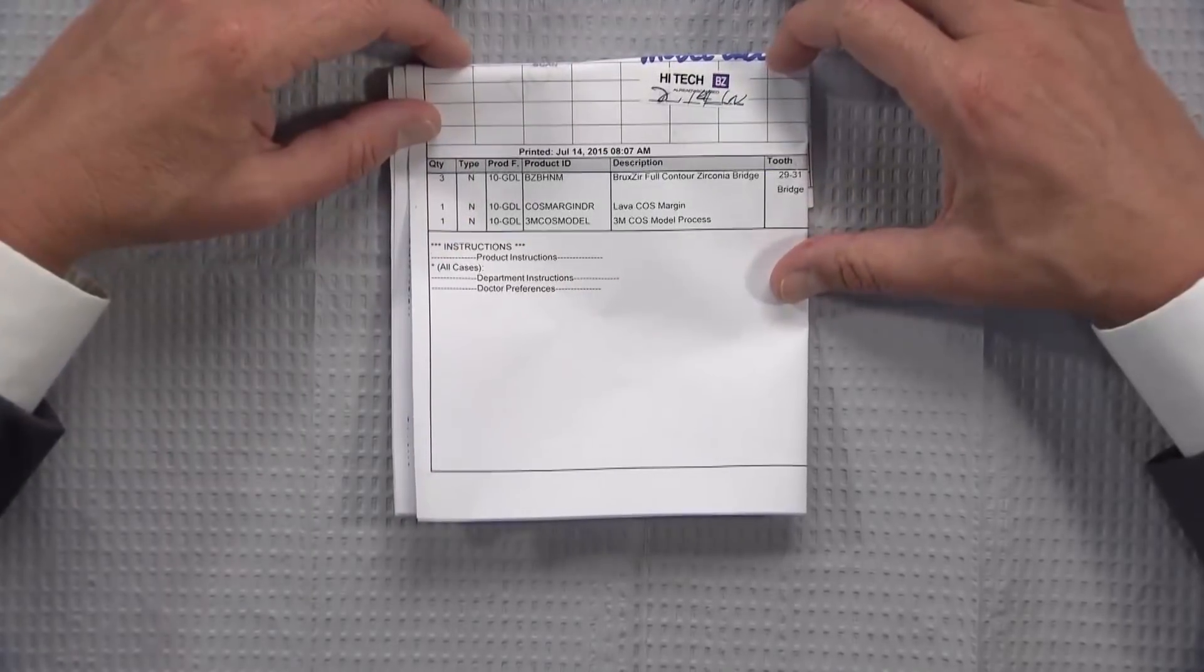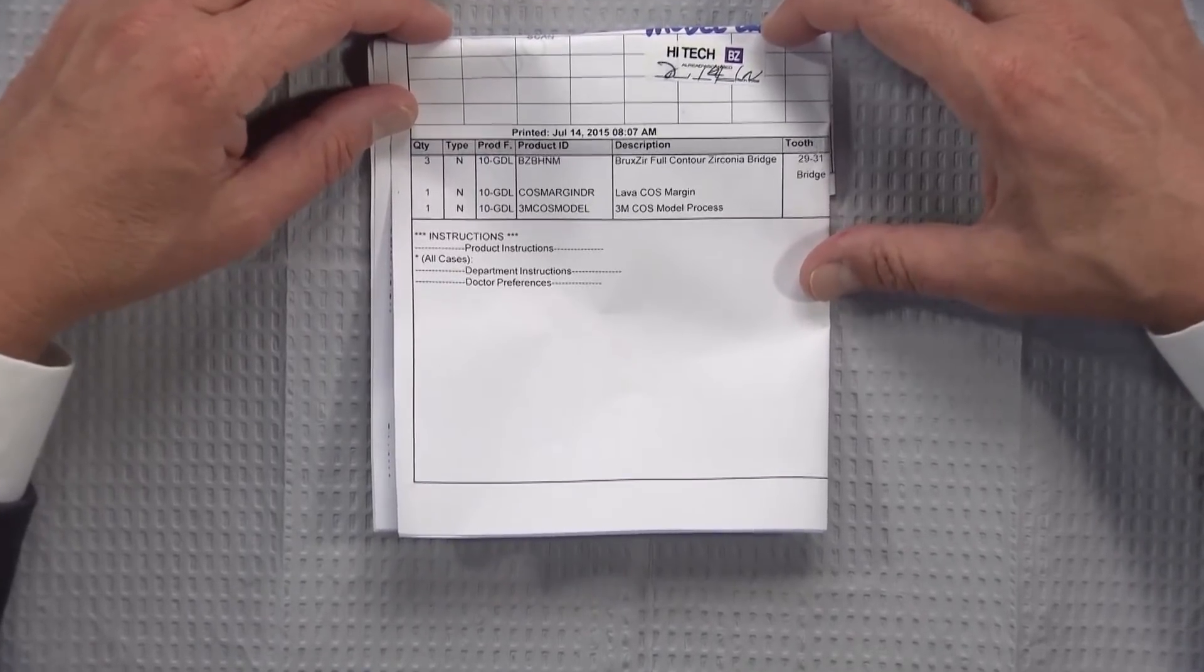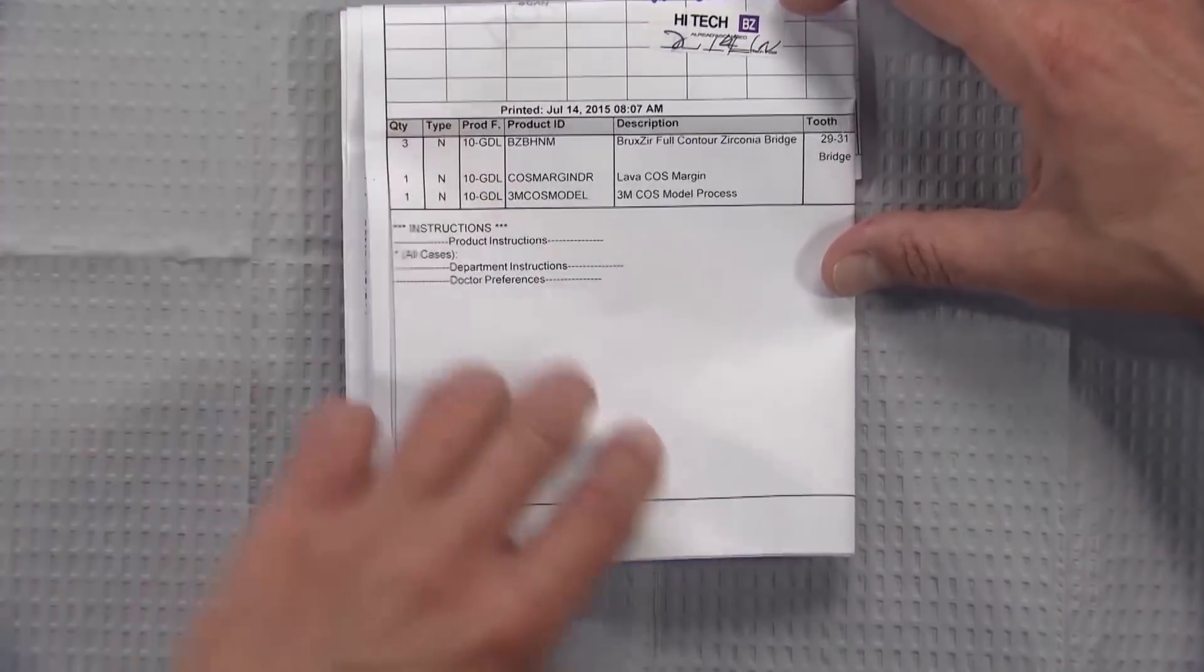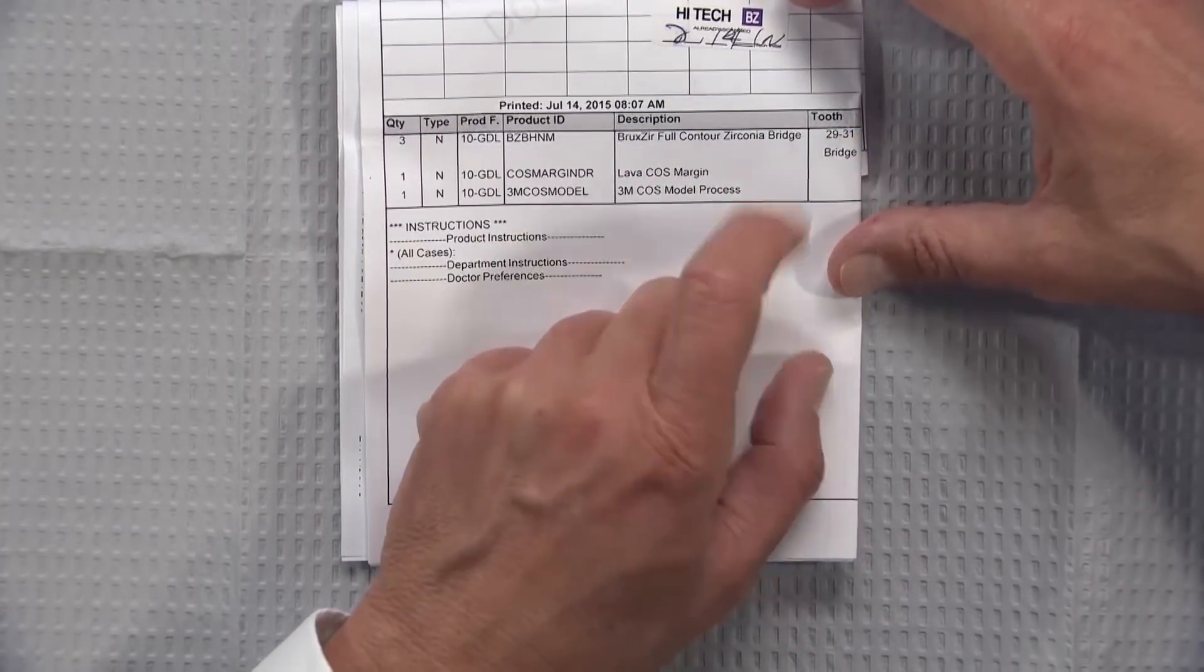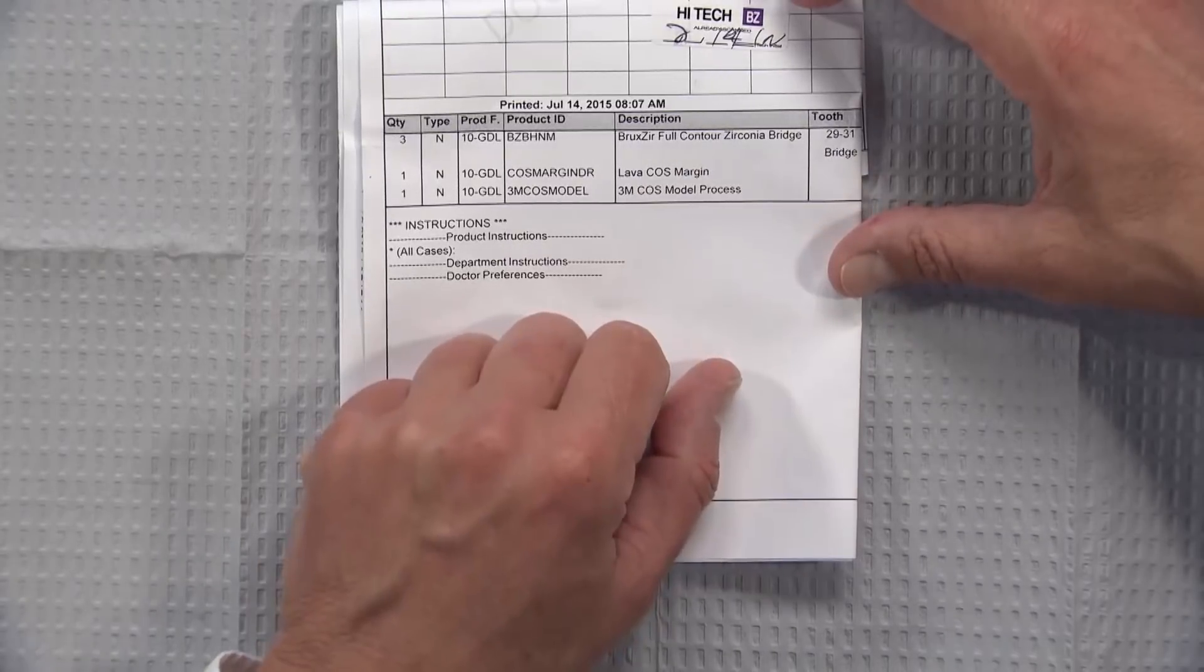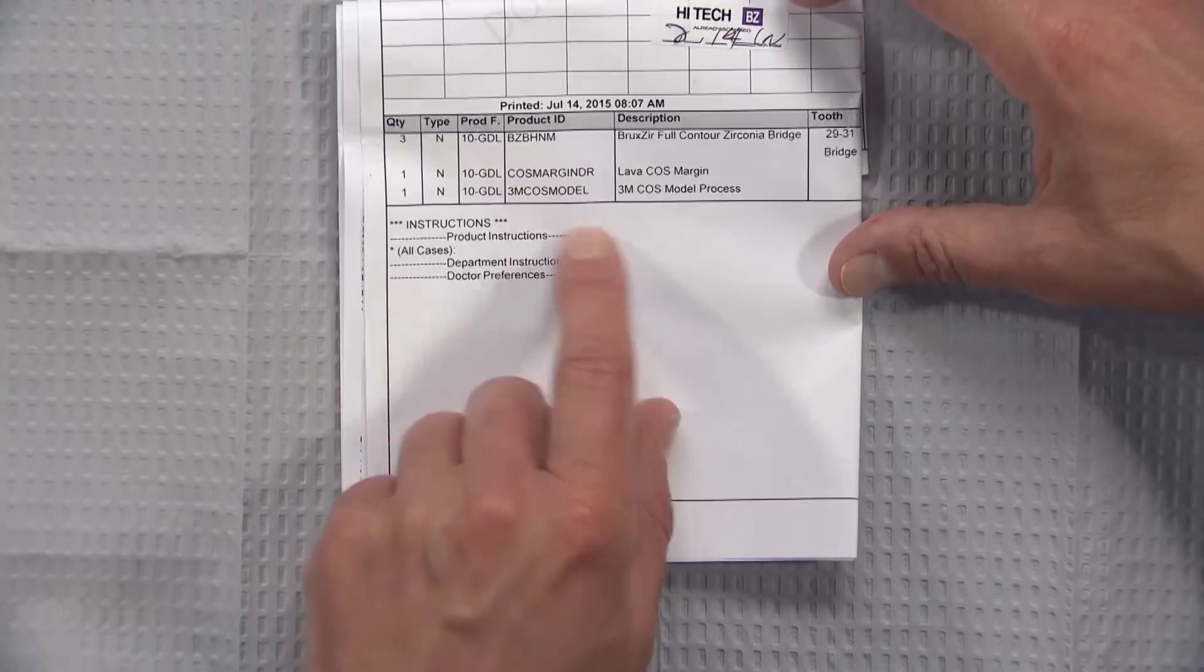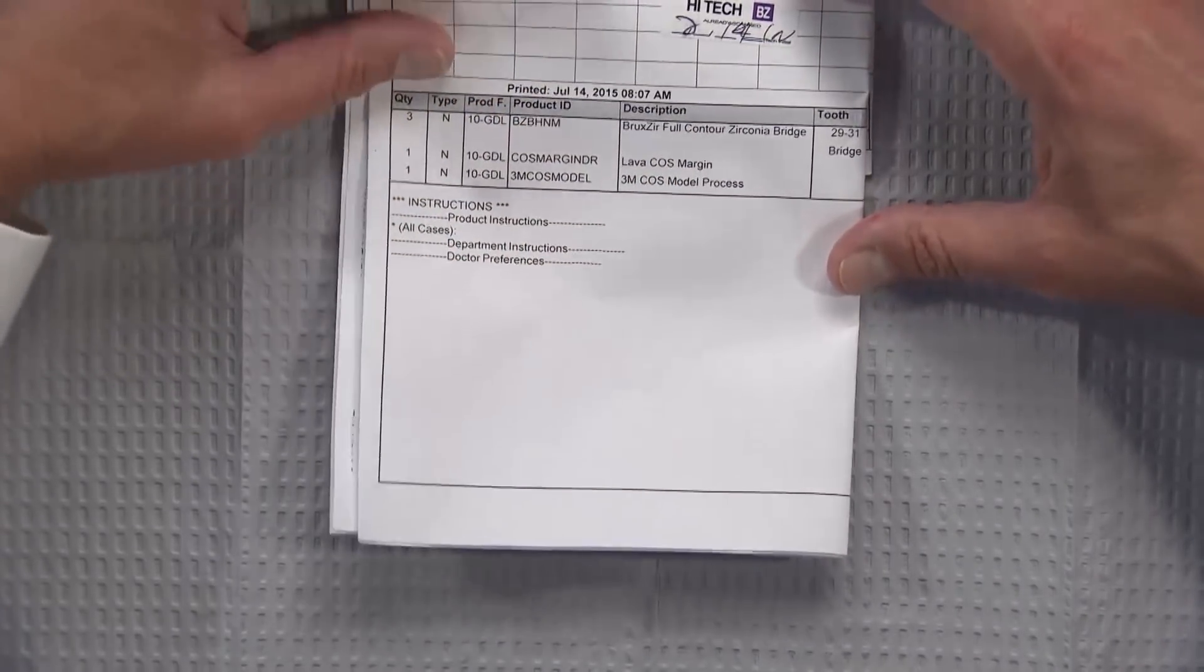Today's case is a doctor who has taken a digital impression with his Lava COS scanner and would like a Bruxer solid full contour zirconia bridge from teeth number 29 to 31. The doctor has the option to request the bridge in the software itself and has requested a model for that, which we obviously want when we're making a bridge, a little different than a single unit where we still like to have a model to be able to work with.